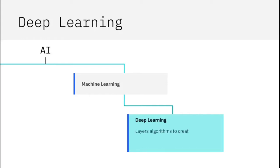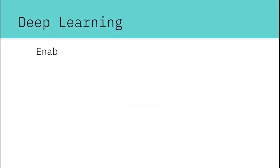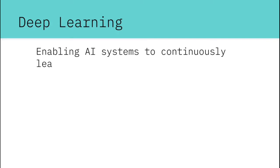Deep learning layers algorithms to create a neural network, an artificial replication of the structure and functionality of the brain, enabling AI systems to continuously learn on the job and improve the quality and accuracy of results.